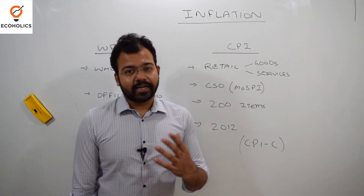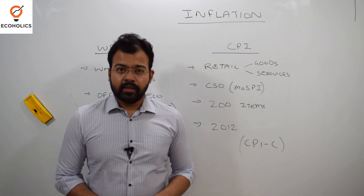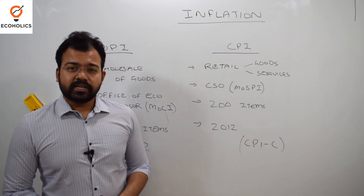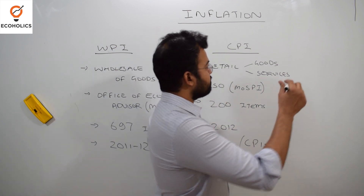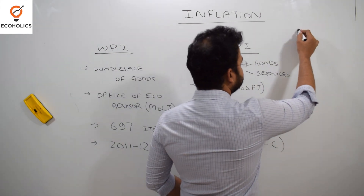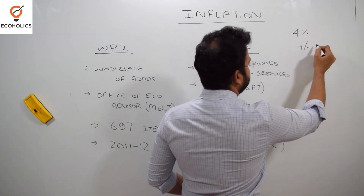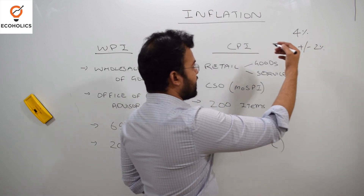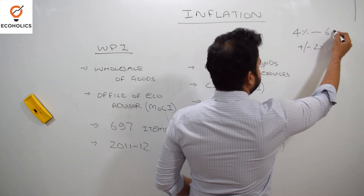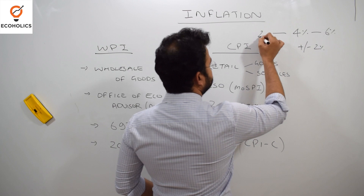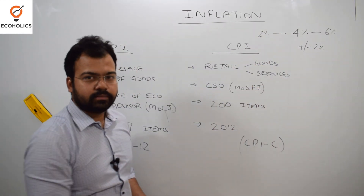There is a target for maintaining the inflation rate at 4%, as recommended by the Urjit Patel Committee in 2015. The committee said inflation should be 4% with a band of plus or minus 2%, meaning RBI can deviate to 6% or 2% on both sides.